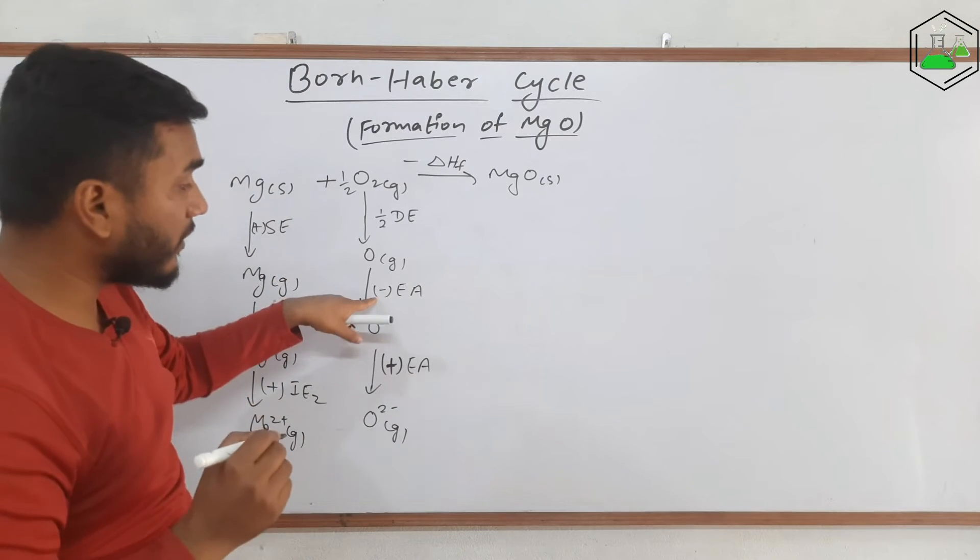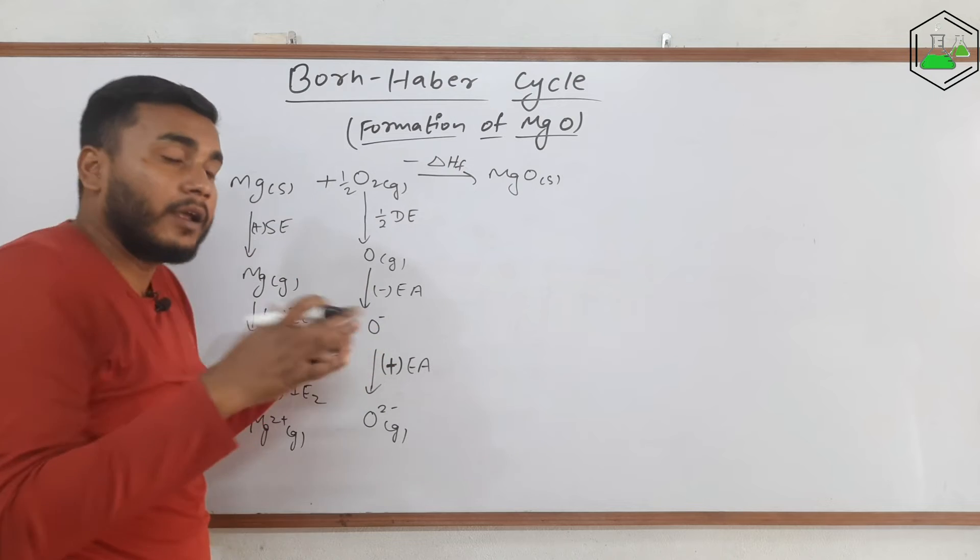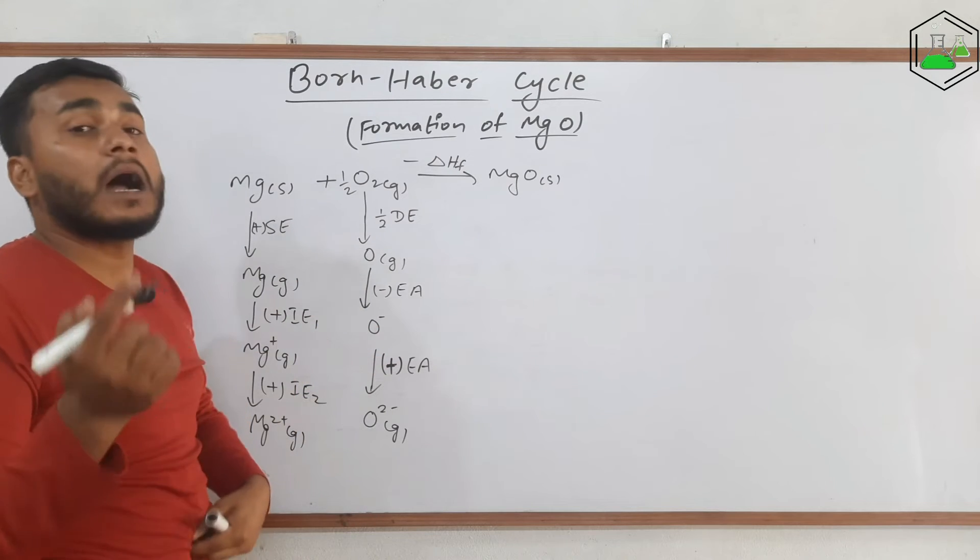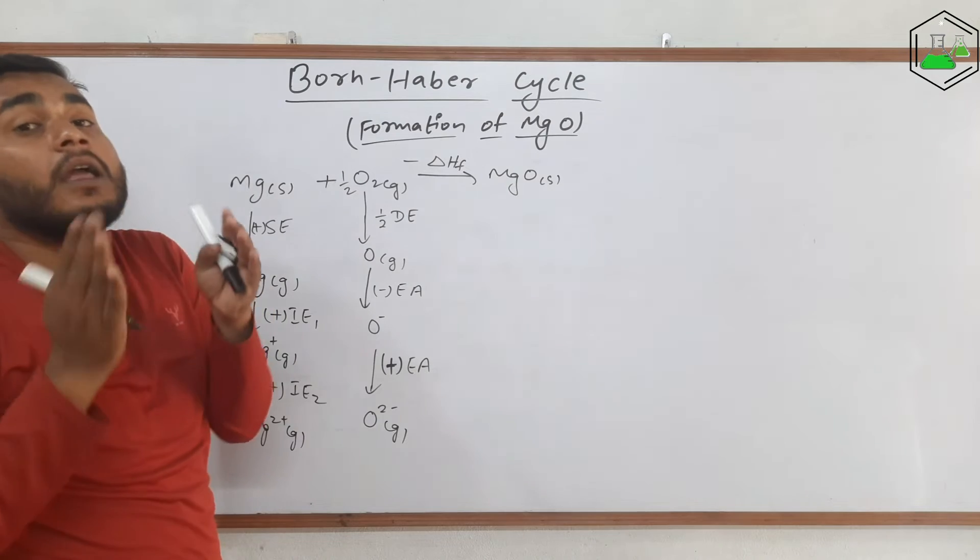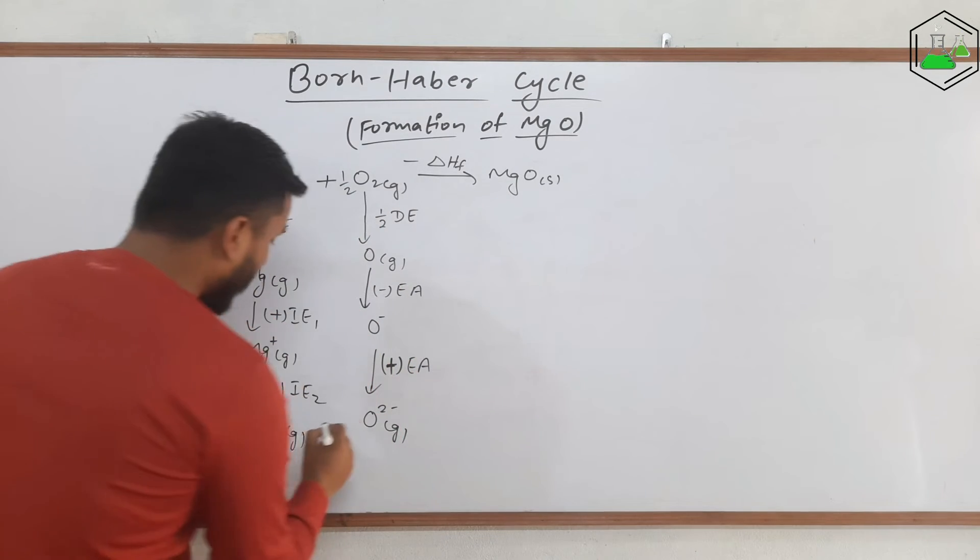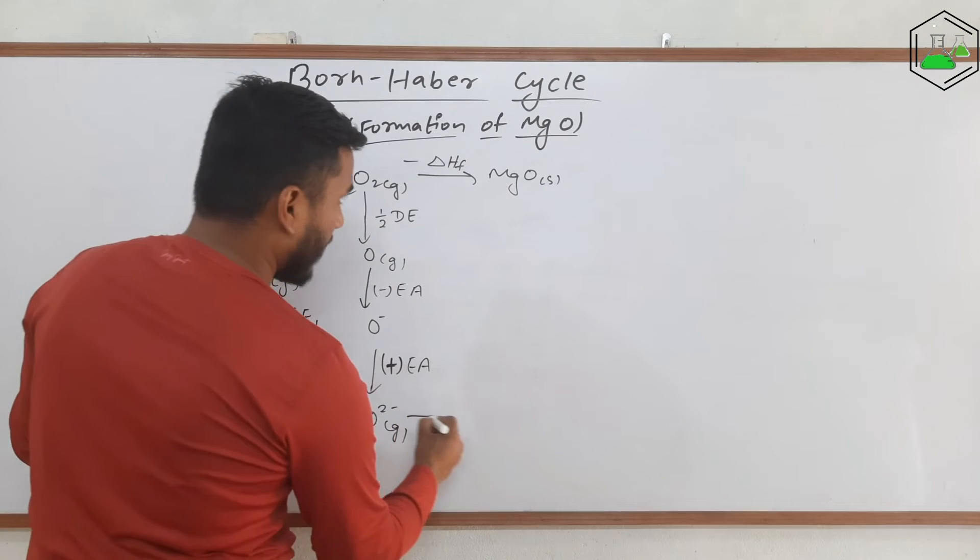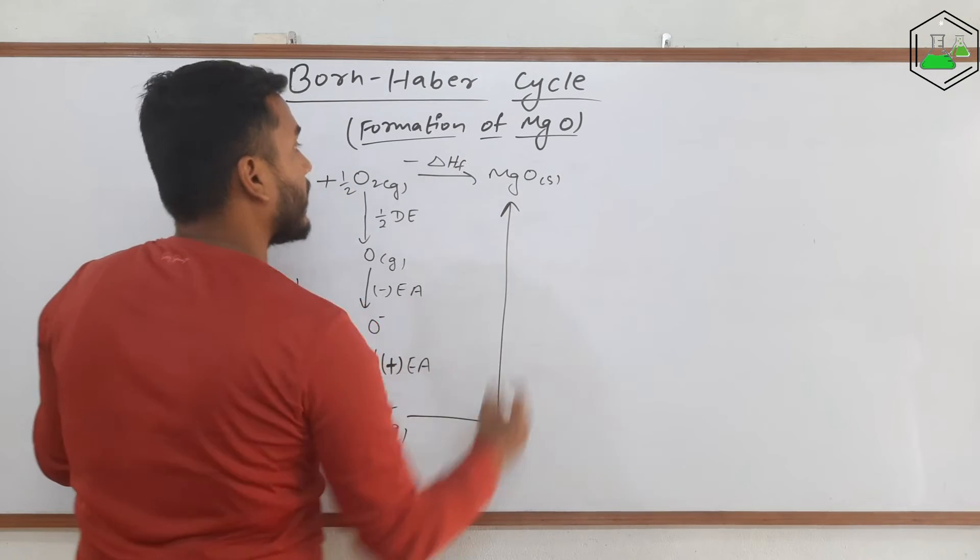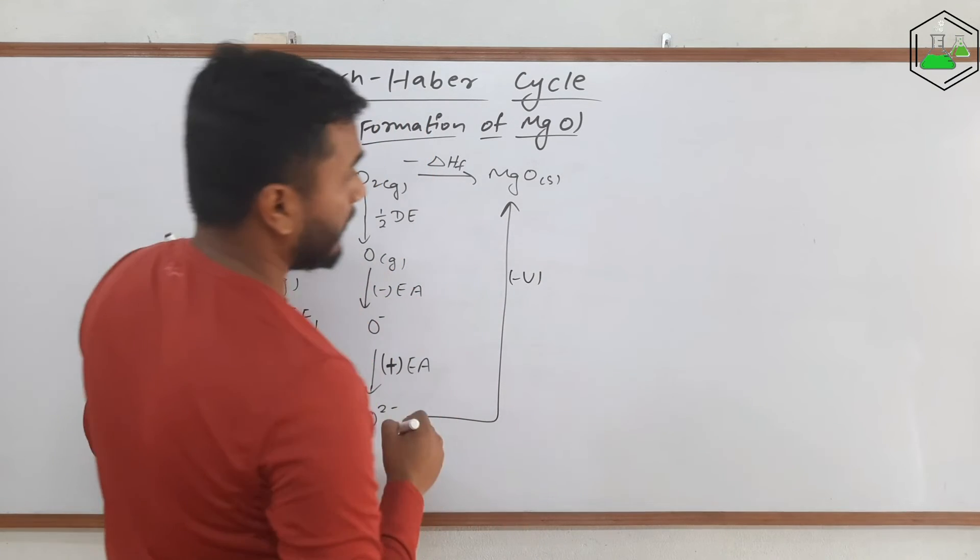That's why we need to provide this much of energy in the second case. Be careful. In the first case some energy is being released. In the second case we need to provide energy to put that electron into the outermost orbital because of the electron cloud repulsion. Finally Mg2+ and O2- are ready for the reaction and when they react they form MgO and some energy is released that is called lattice energy.